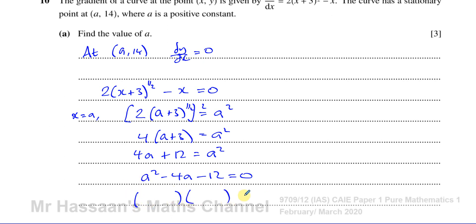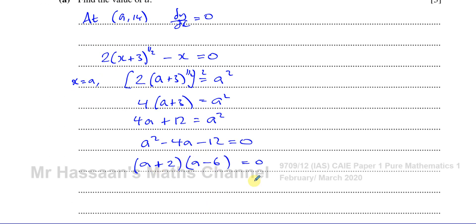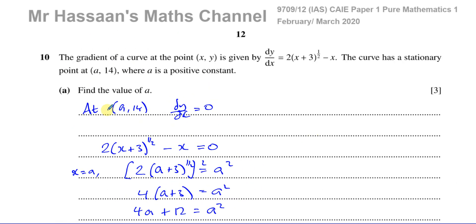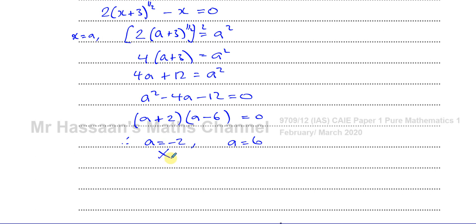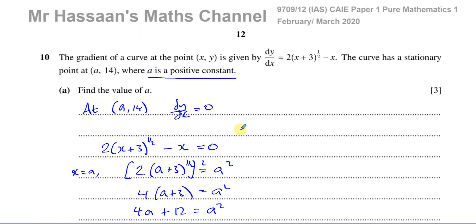I can solve this by factorizing. I need two numbers that multiply to give negative 12 and add to give negative 4 — that's negative 6 and positive 2. So (a + 2)(a − 6) = 0, giving a = −2 or a = 6. Since we're told a is a positive constant, a = 6.